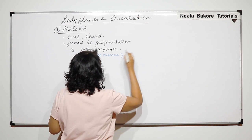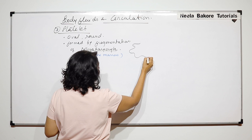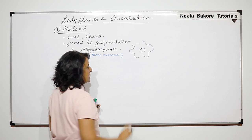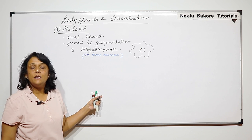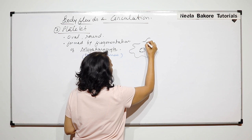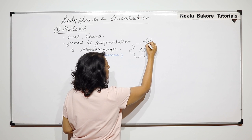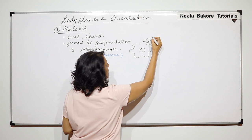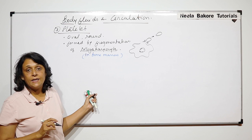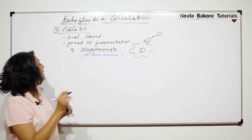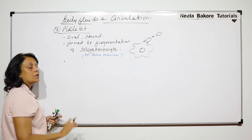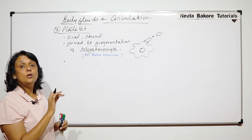Now, megakaryocyte is nucleated — it has a nucleus. When there is fragmentation in it, a small part is pinched off and separated from it. This separated part will only contain cytoplasmic content; the nucleus does not come along. So platelets are made from this megakaryocyte fragmentation, and there is no nucleus in them.